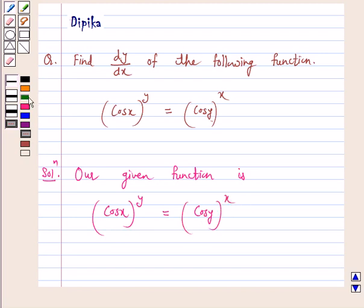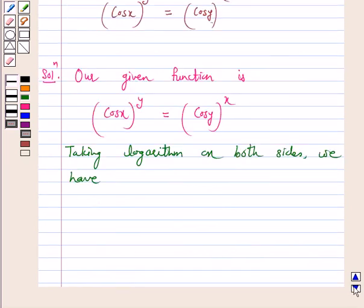Taking logarithm on both sides, we have y log(cos x) = x log(cos y).